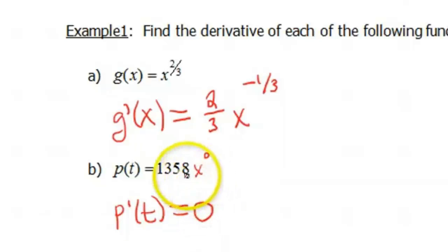Now another way you can think about this too is if you were to graph the function 1,358, it would be a horizontal line. Horizontal lines have 0 slope. So of course the derivative's gonna be 0.